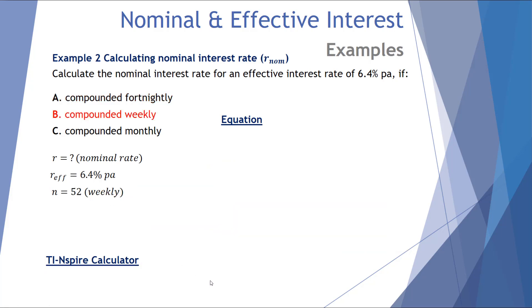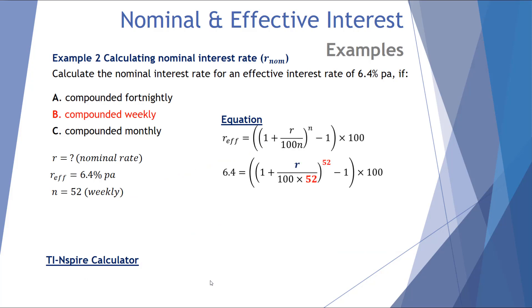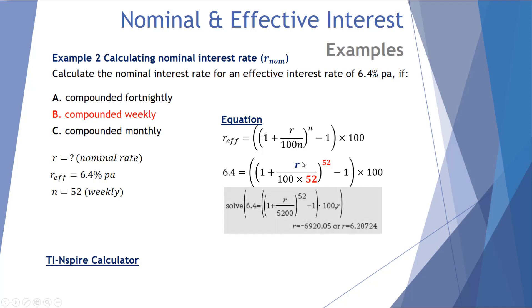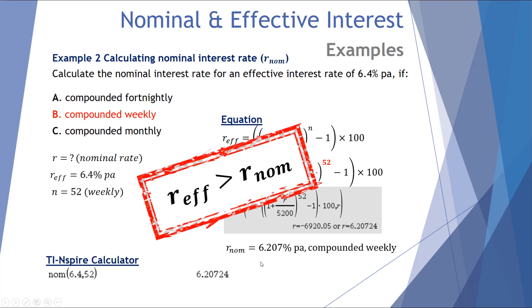Example two: the same effective rate of 6.4%, but compounded weekly. With N = 52 compounding periods per year, using the solve function the only plausible answer is a nominal rate of 6.207%. Using the calculator's NOM function with an effective of 6.4 and 52 compounding periods also returns 6.207%. Always check that the effective rate is greater than the nominal rate.